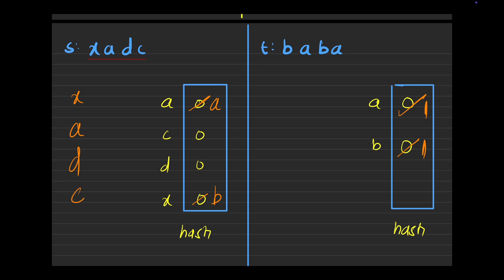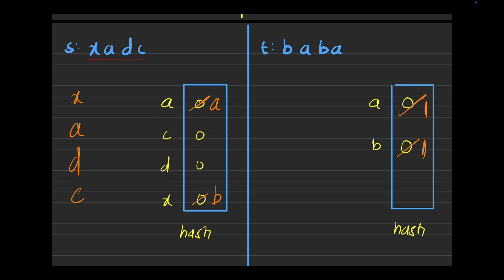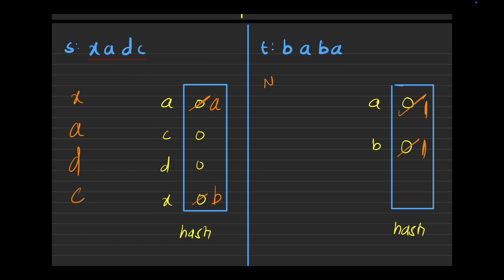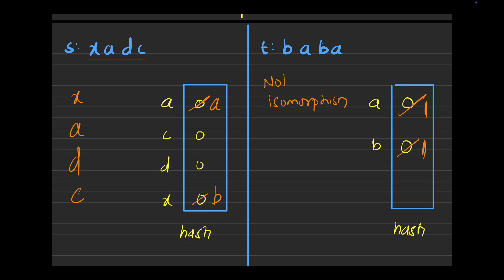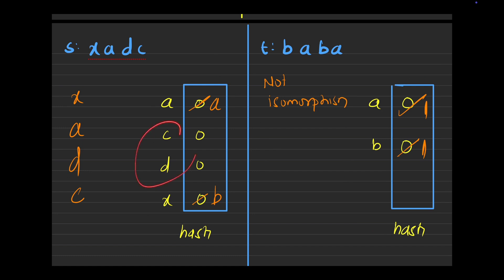Now I come across C. I check: is C mapped with anyone else? No. I can map C to A, but I need to check whether A is already mapped. Yes — A is already mapped. Therefore, I cannot map anything to C either. D and C are not mapped with anyone, which means these two strings are not isomorphic, because every character present in S is not mapped with the characters present in T.